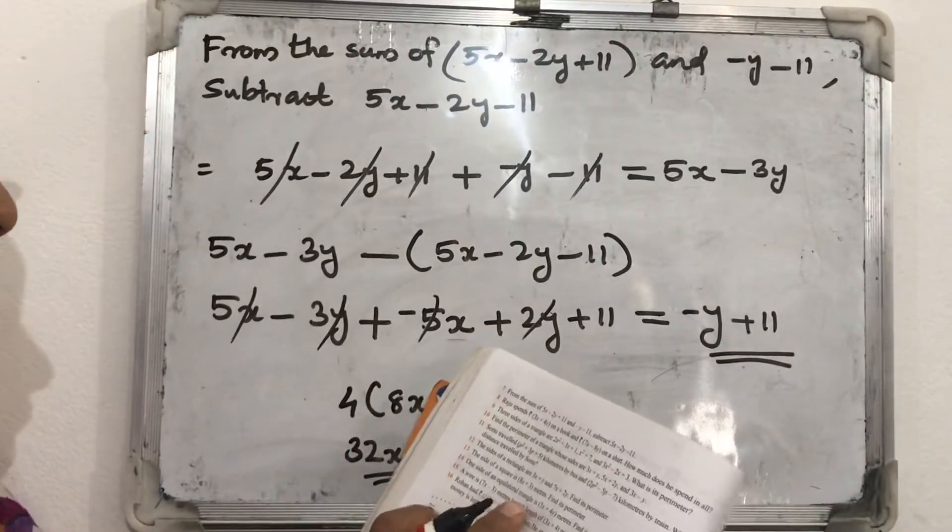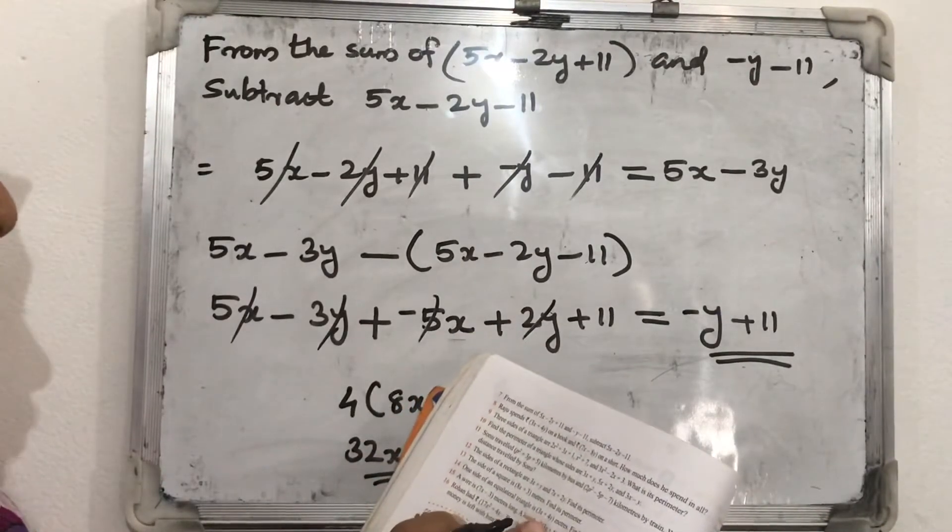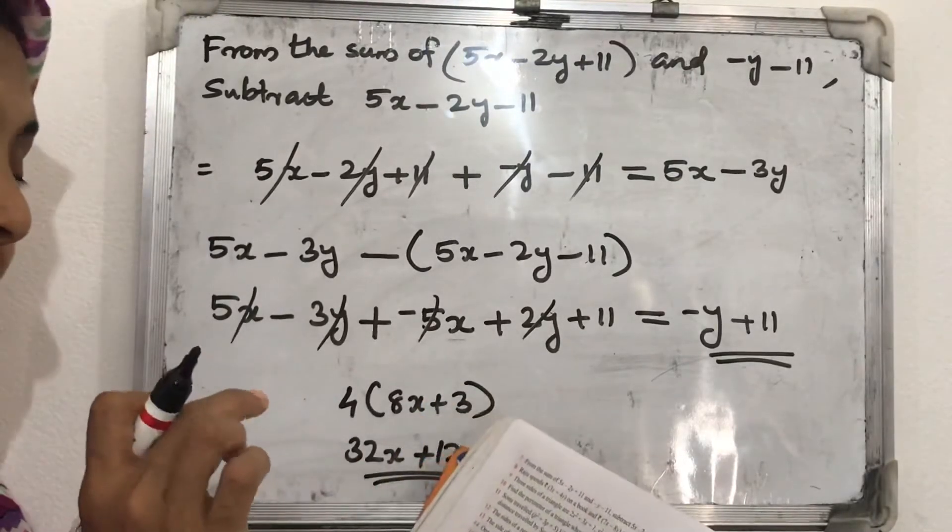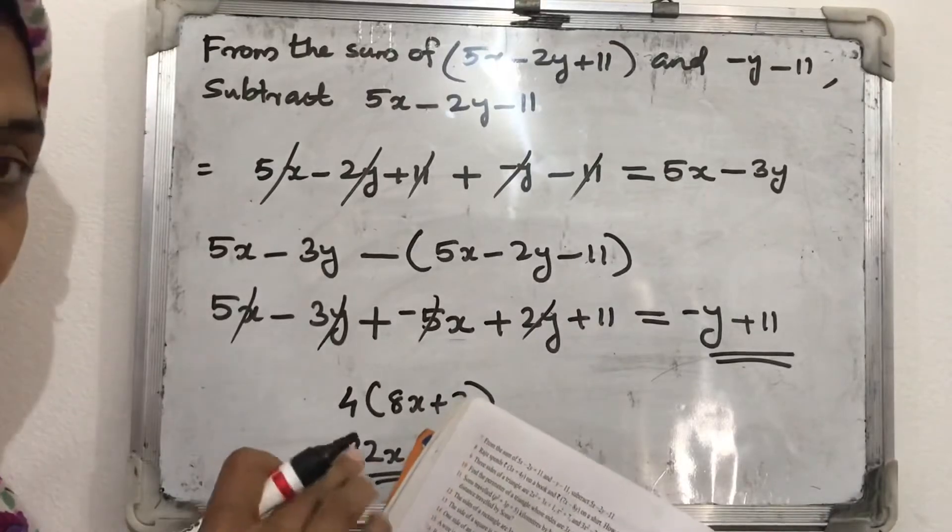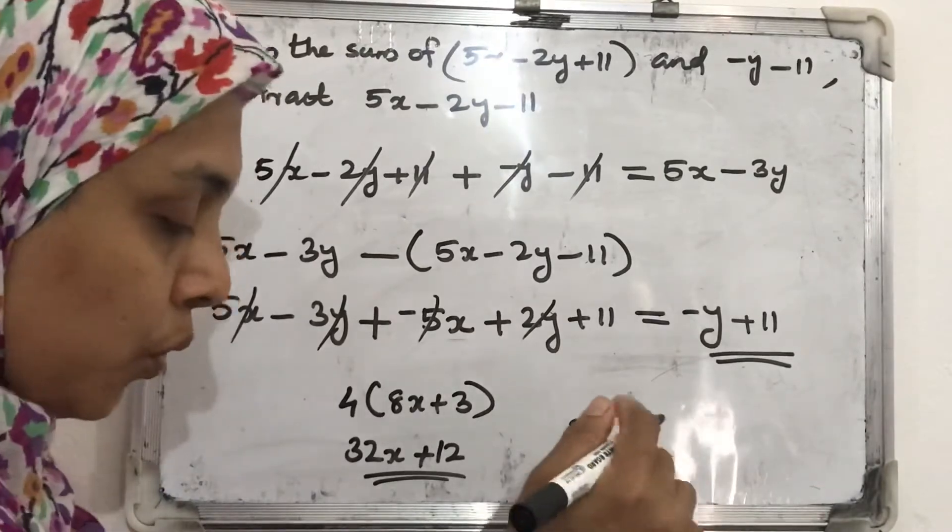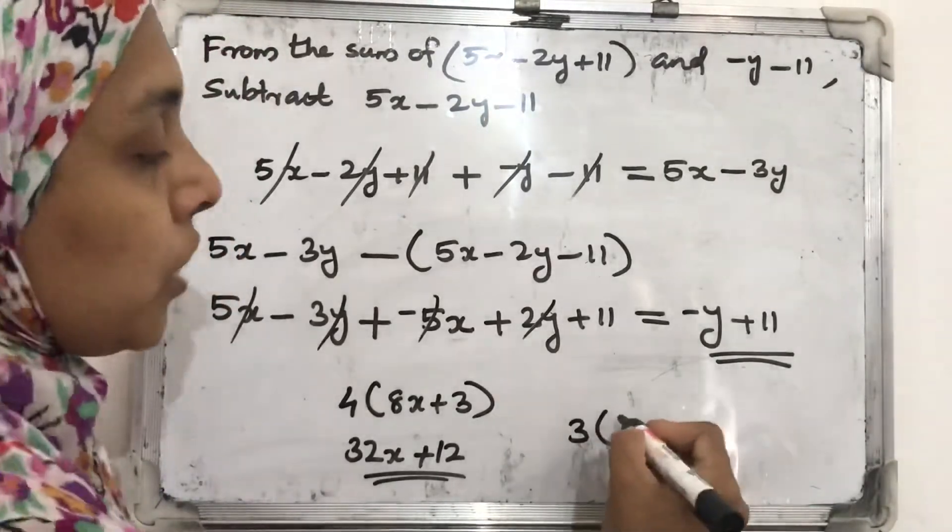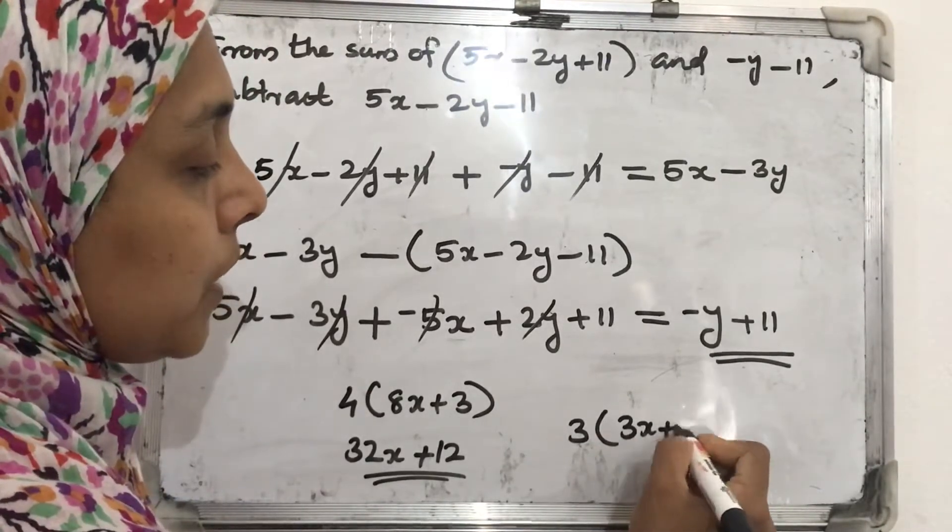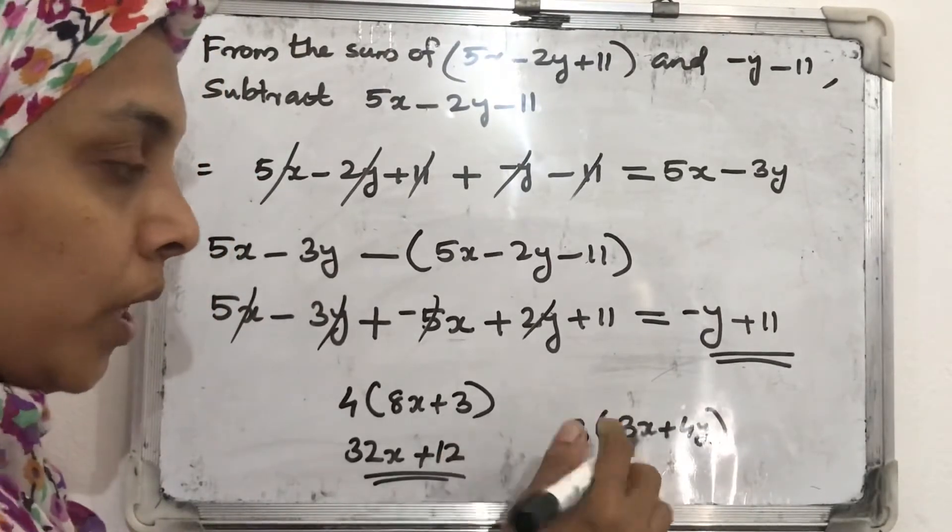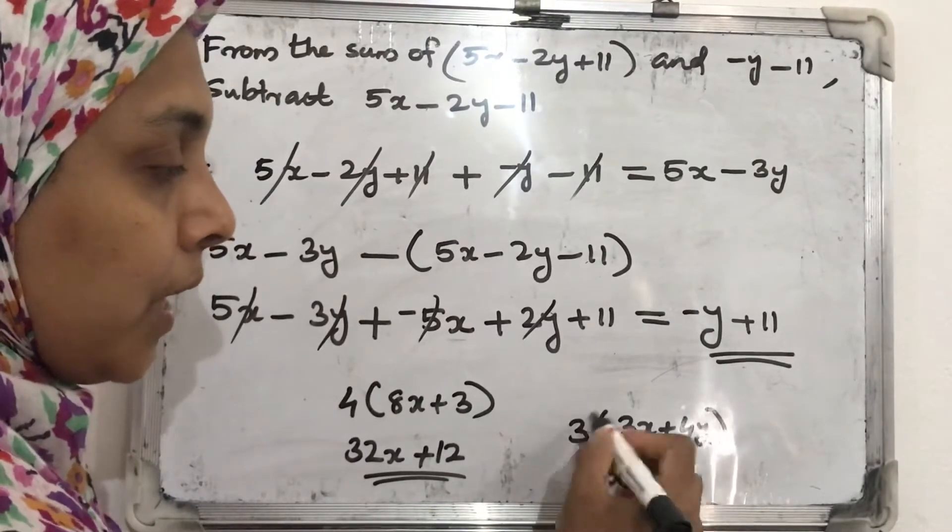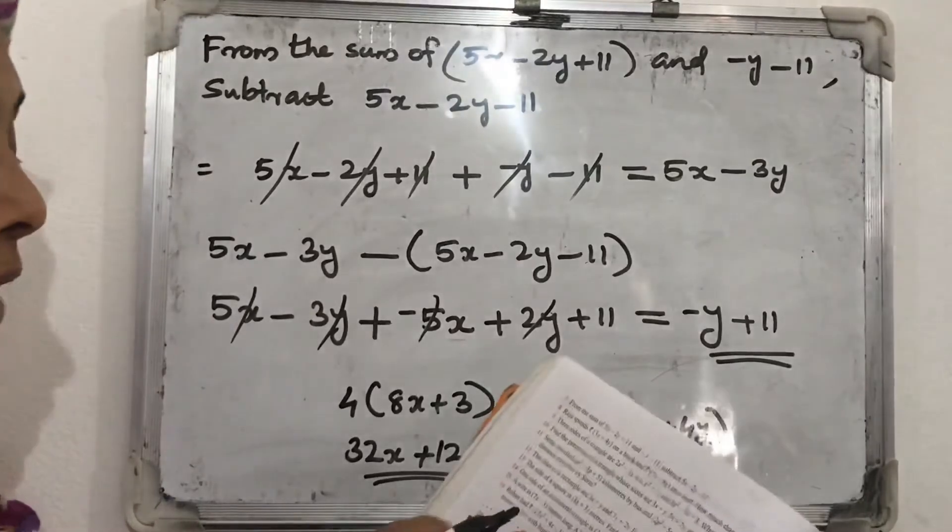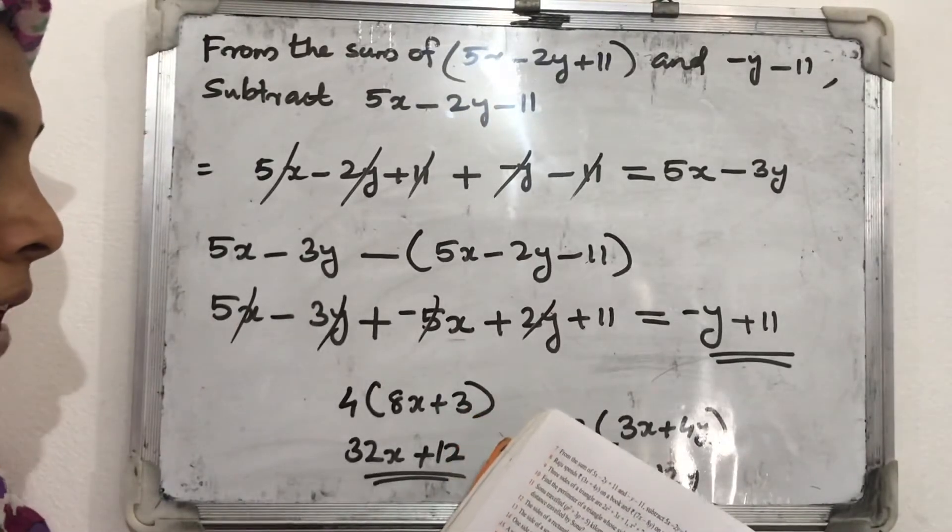Next, one side of an equilateral triangle is 3x plus 4y meters. Find its perimeter. Here it is equilateral triangle. So all the sides will be equal. So we can multiply 3. Multiply with 3. 3 into which one? 3x plus 4y. So how you can do? 3 into 3x, 9x, plus 3 into 4y, 12y. This way we can find out the perimeter of that equilateral triangle.